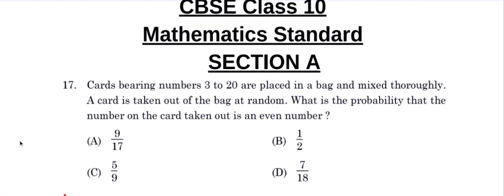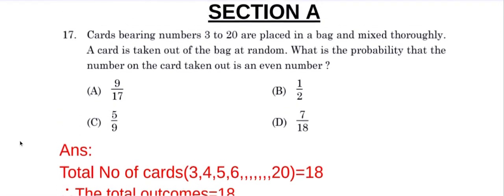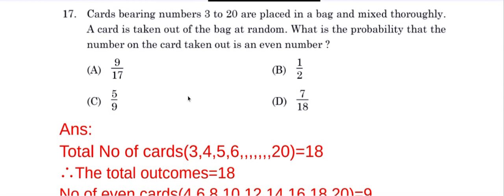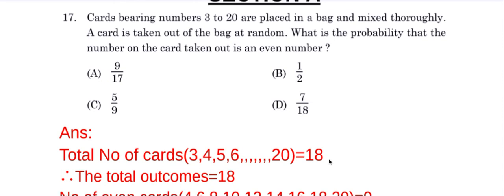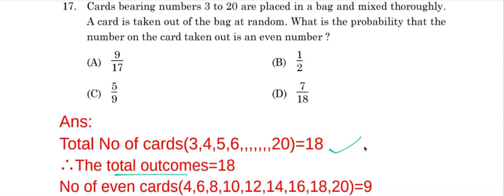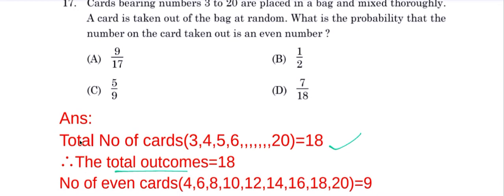So let's find the answer. The total number of cards, that is numbers 3 to 20, gives us a total of 18 cards. So the total number of outcomes will be 18.